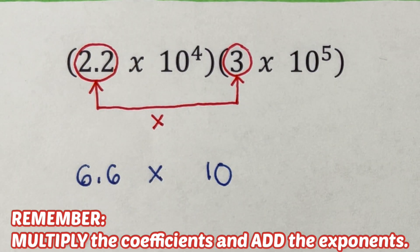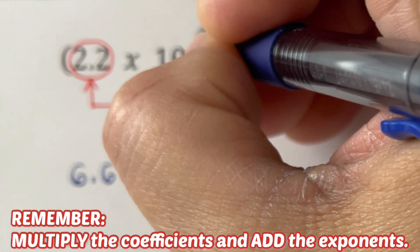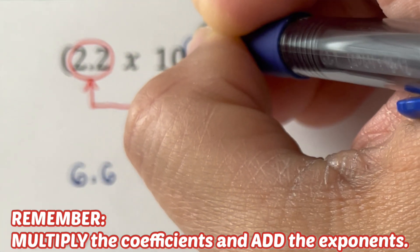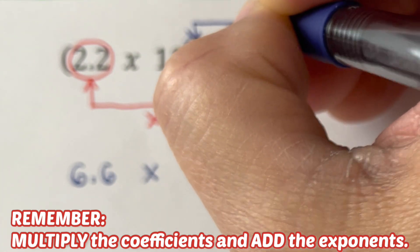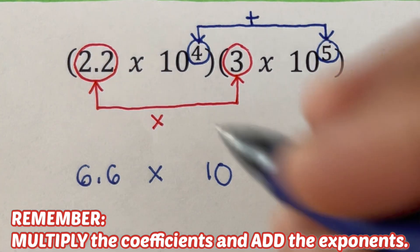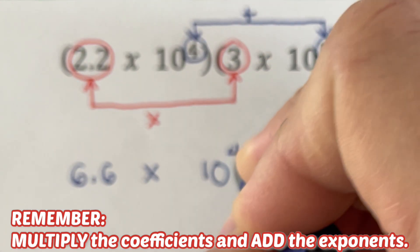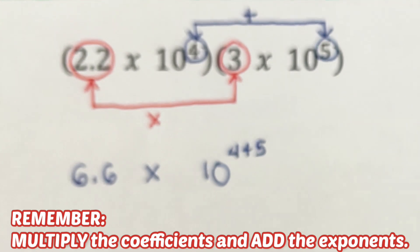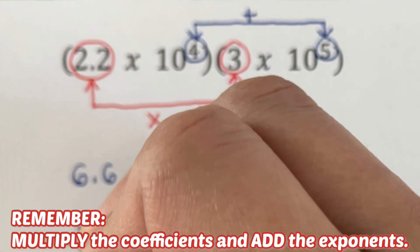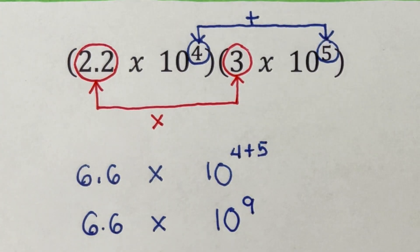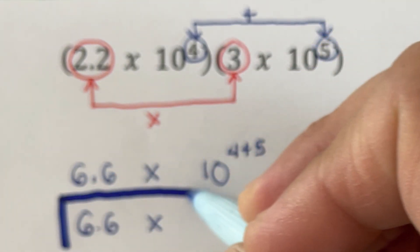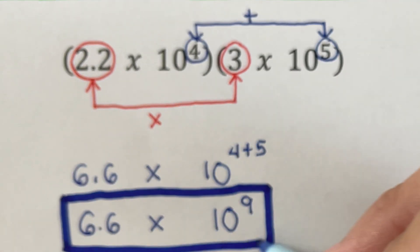For the exponent, we add them: 4 and 5 shall be added together, so that is 4 plus 5. The final answer is 6.6 times 10 to the power 9. This is the product of these two scientific notations.